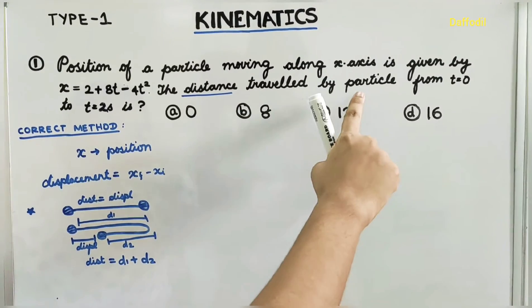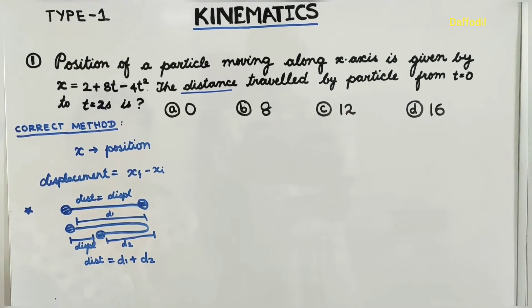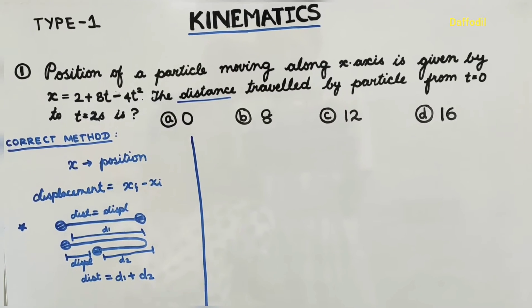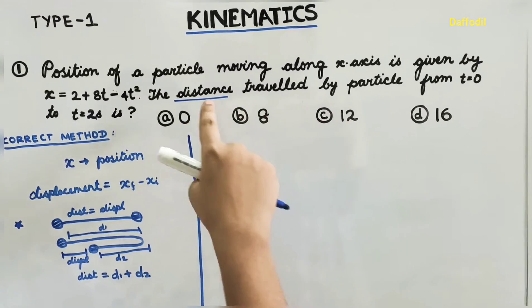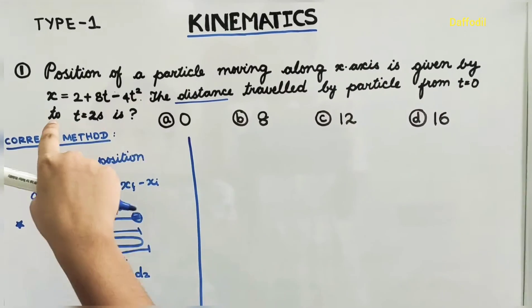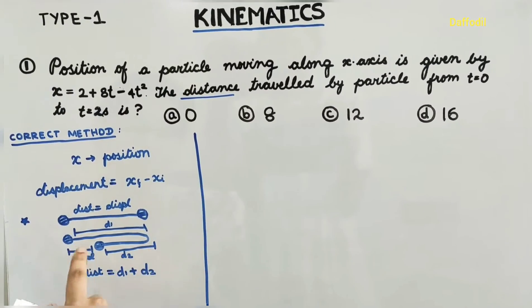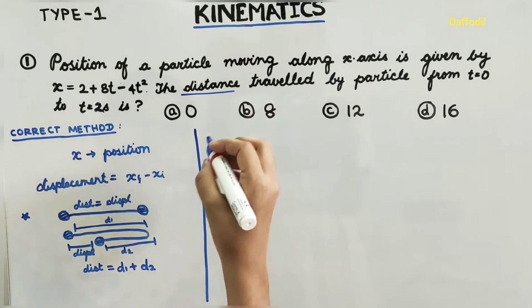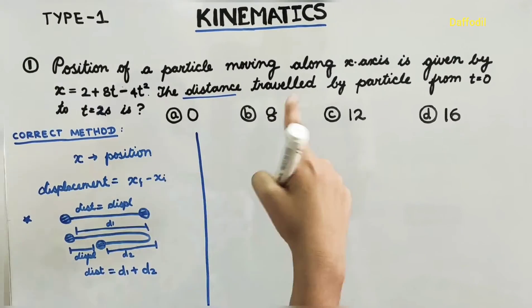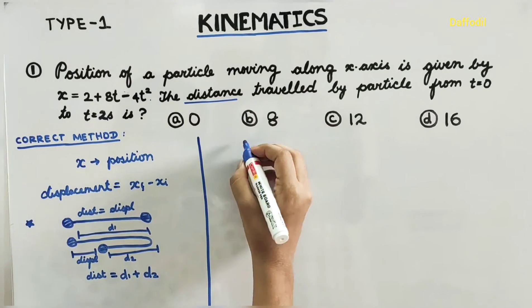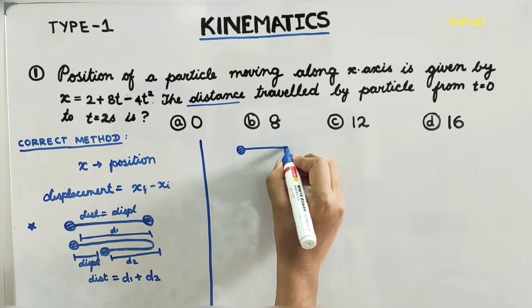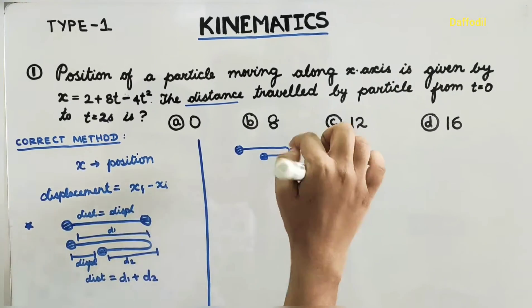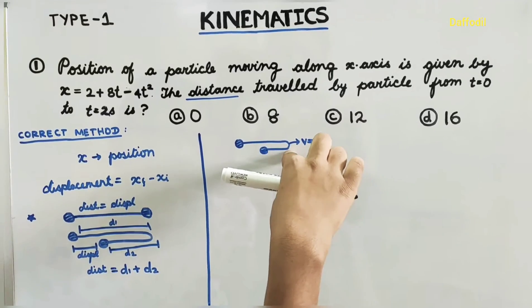For the distance travelled from t = 0 to t = 2 seconds, we need to check whether the particle turns around. The turning point is where velocity equals zero. So we need to find when velocity becomes zero — that information is not directly available, so we must derive it.